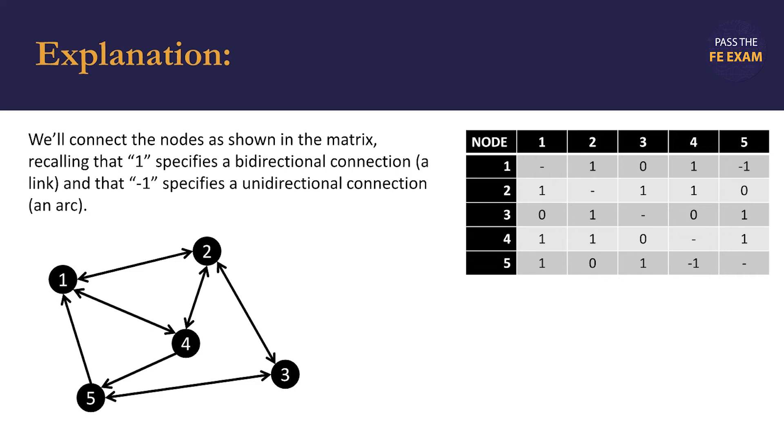We've completed all of the connections. There's no other nodes that node five can connect to, so we can now count the number of links and arcs. We see that there are five links between nodes one and two, nodes one and four, nodes two and three, nodes two and four, and nodes three and five. So those are five links total.